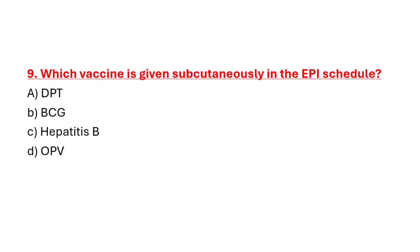Question 9: Which vaccine is given subcutaneously in the EPI schedule? Option A: DPT. Option B: BCG. Option C: Hepatitis B. Option D: OPV. Correct answer is Option B: BCG.